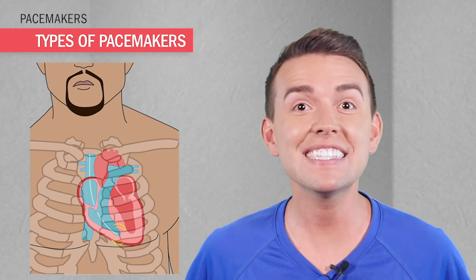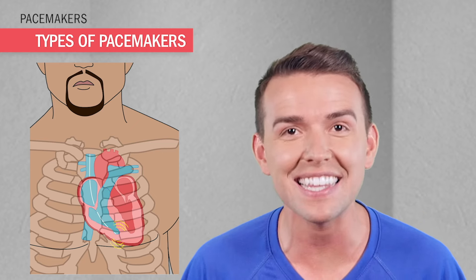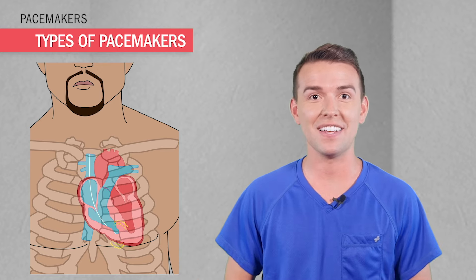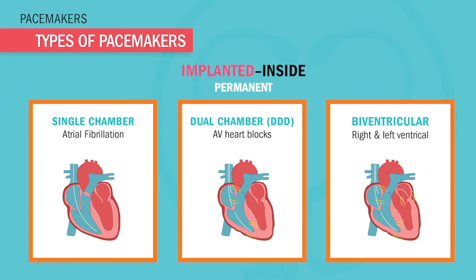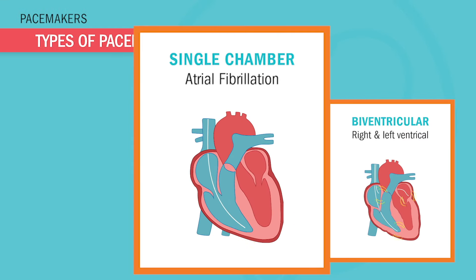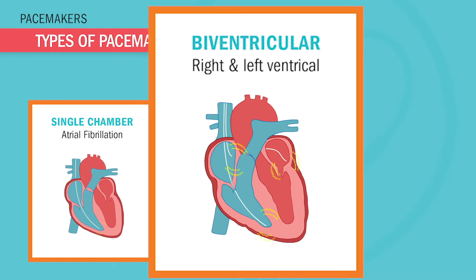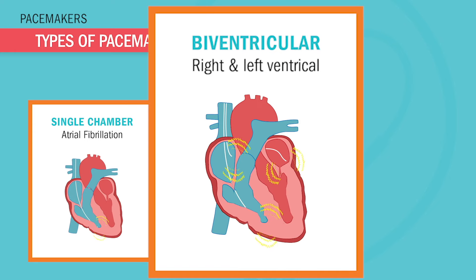Next up: implanted permanent pacemakers — the most common and most commonly tested. These are surgically placed directly into the heart — the little robot versions of the SA and AV nodes. There are three types: number one is single chamber — one lead in the right side of the heart, most commonly used for afib or a-flutter. Number two is dual chamber DDD — two leads, one in the right atria and one in the ventricle, used for AV block. Least common is biventricular — two or three wires going into both ventricles.